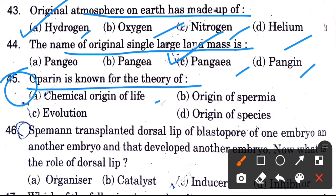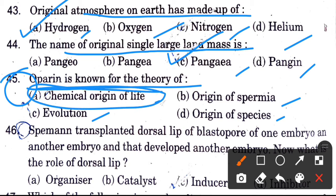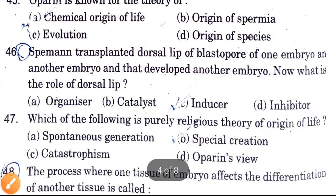Oparin is known for the theory of — options are chemical origin of life, origin of panspermia, evolution, and origin of species. Oparin is known for the chemical theory of life.